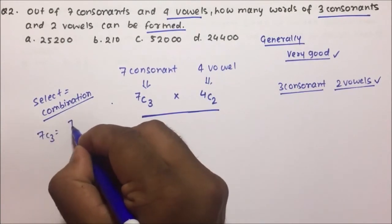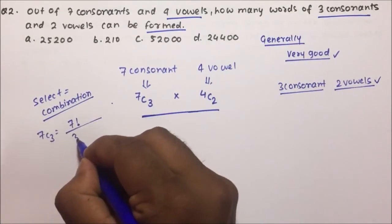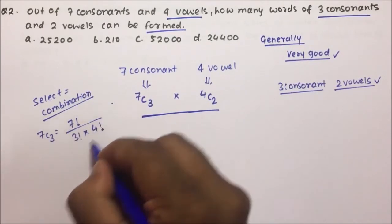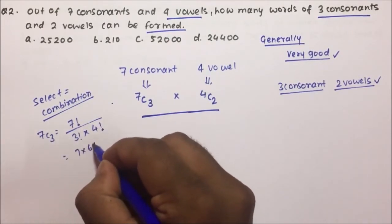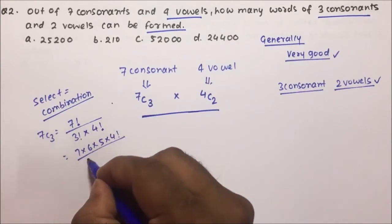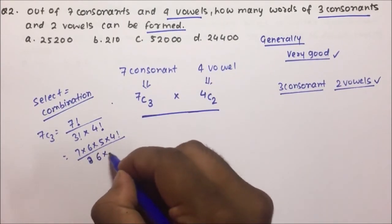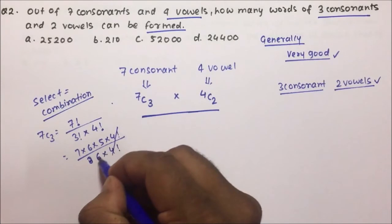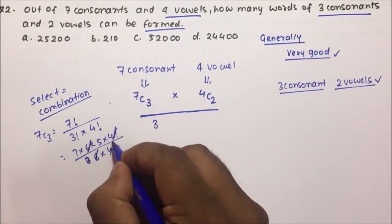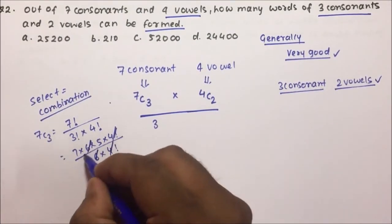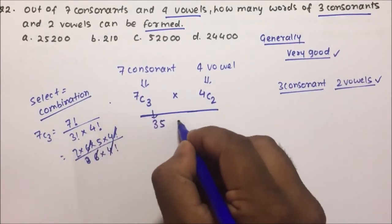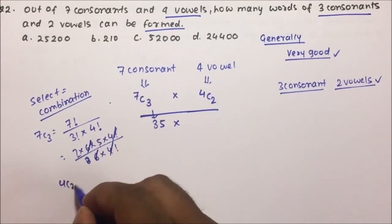7C3: using the formula, 7! divided by 3! × (7−3)! = 7! / (3! × 4!). Expanding: (7 × 6 × 5 × 4!) / (3! × 4!). The 4! and 3! (which equals 6) cancel, leaving 7 × 5 = 35. So 7C3 = 35.